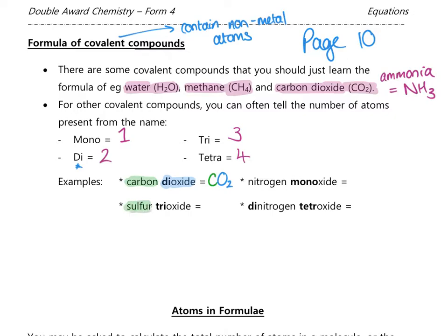Sulfur trioxide: no prefix on sulfur, so symbol S; tri-oxide means three oxygens, giving SO₃. Nitrogen monoxide: no prefix on nitrogen; mono-oxide means one oxygen, giving NO. Dinitrogen tetroxide: di-nitrogen means two nitrogens, giving N₂; tetra means four, so four oxygens, giving the formula N₂O₄.